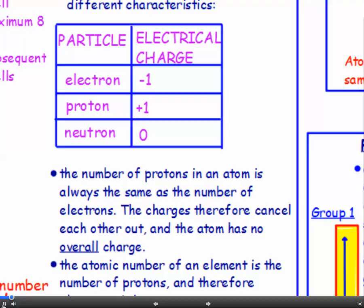Now, the number of protons in an atom is always the same as the number of electrons. So that means the charges, therefore, cancel each other out, and the atom has no overall charge. Because the number of positive charges is the same as the number of negative charges, there's no overall charge, and an atom is neutral.